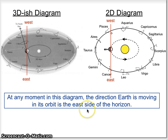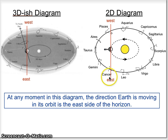There's a helpful note that says the direction the Earth is moving in its orbit tells us the east side of the horizon. The arrows in our diagram show that Earth orbits the sun counterclockwise when viewed from above. At this position, Earth would be moving downward in the picture, so down is the east side of the horizon and up is the west side. On the 2D version, it's easier to draw the horizon and determine which side is east and which is west.